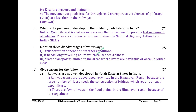What is the purpose of developing the Golden Quadrilateral in India? The Golden Quadrilateral is a six-lane expressway designed to provide fast movement of vehicles, constructed and maintained by the National Highway Authority of India (NHAI). Mention three disadvantages of waterways: transportation depends on weather conditions; it needs long traveling hours which causes sea sickness; water transport is limited to areas where rivers are navigable or oceanic routes exist.